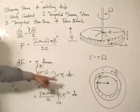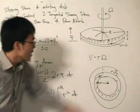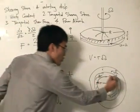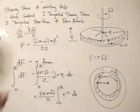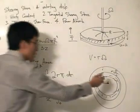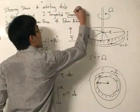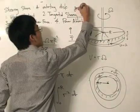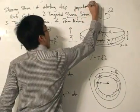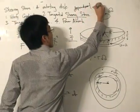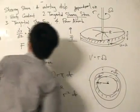That is the tangential shearing force of the whole disc — found using calculus by considering a small annular strip where the shearing stress is constant, since shearing stress is dependent on r.